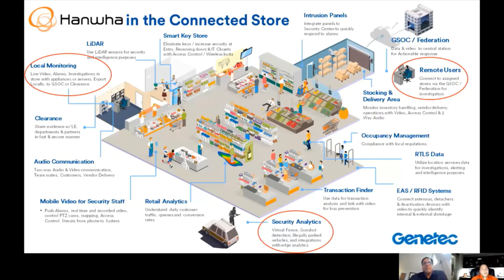We've been talking about this connected store and there are a lot of elements on this graphic that we feel we are part of — from occupancy management where we can deploy cameras for people counting in a traditional security field-of-view instead of the top-down vertical approach, to retail analytics like queue management, and security analytics like line crossing, enter/exit, appear/disappear, vehicle in unauthorized area. All of these are happening on the edge.